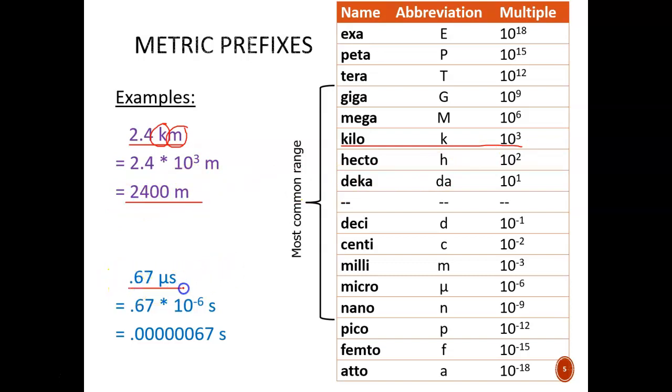0.67 microseconds is shown. This symbol is the Greek letter mu, which we can see means micro, or 10 to the negative 6 power, or one millionth. Altogether, 0.67 microseconds is equal to 0.00000067 seconds. That is a very short amount of time, but thankfully, most modern computers are performing steps even faster than that.